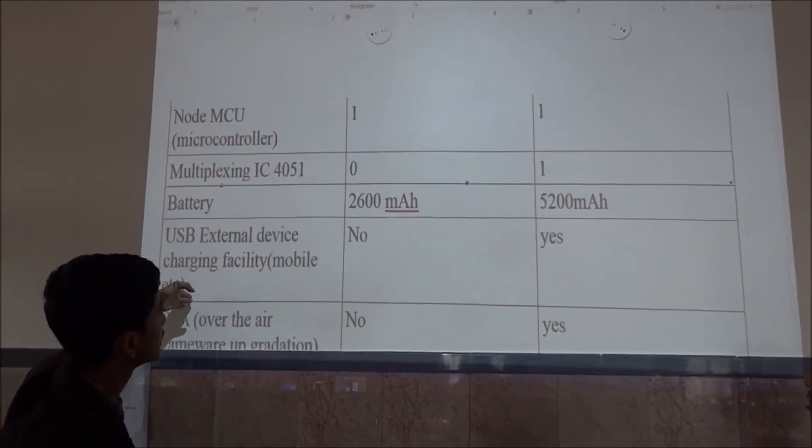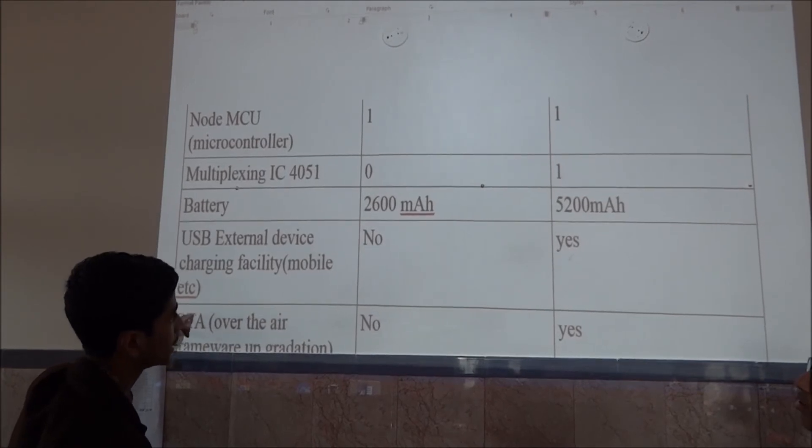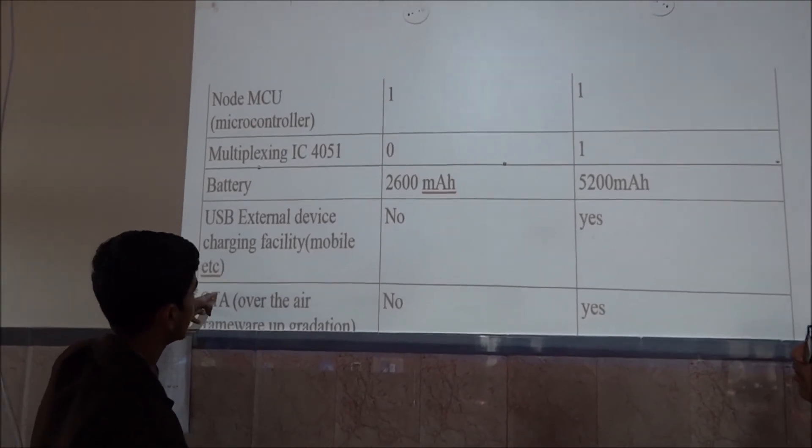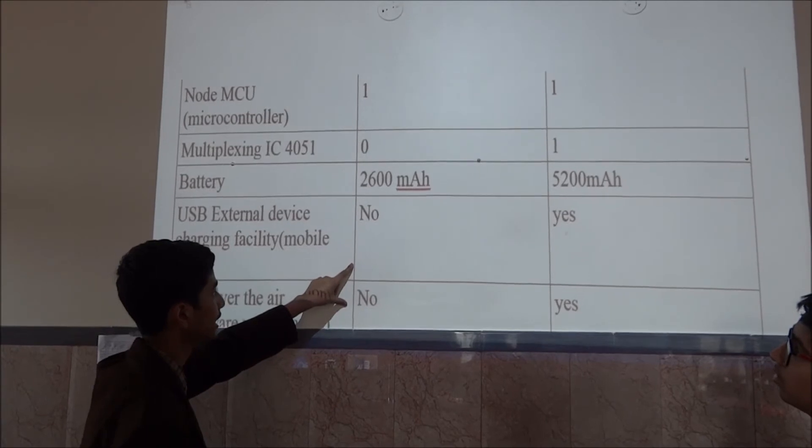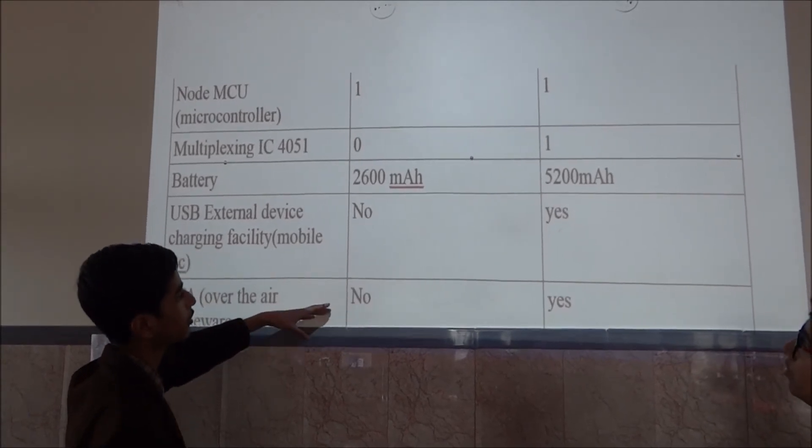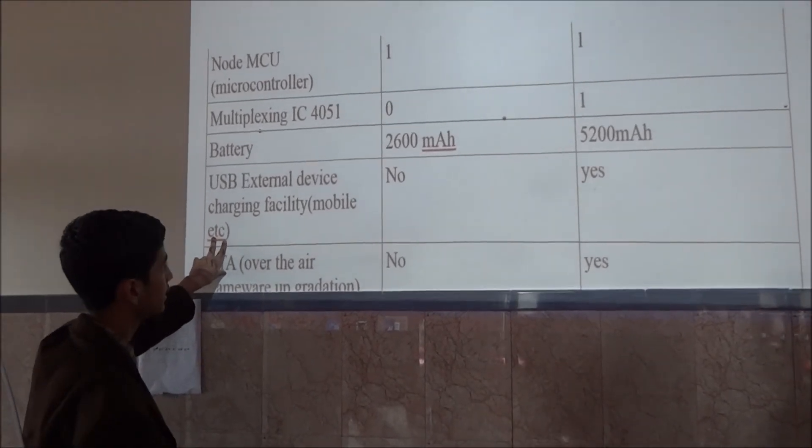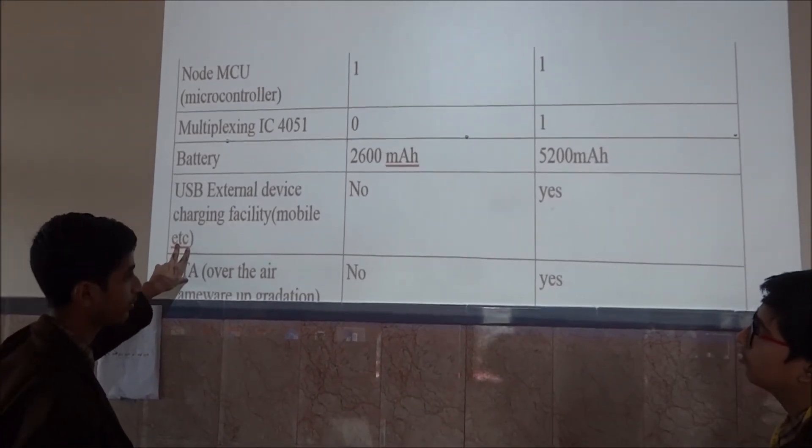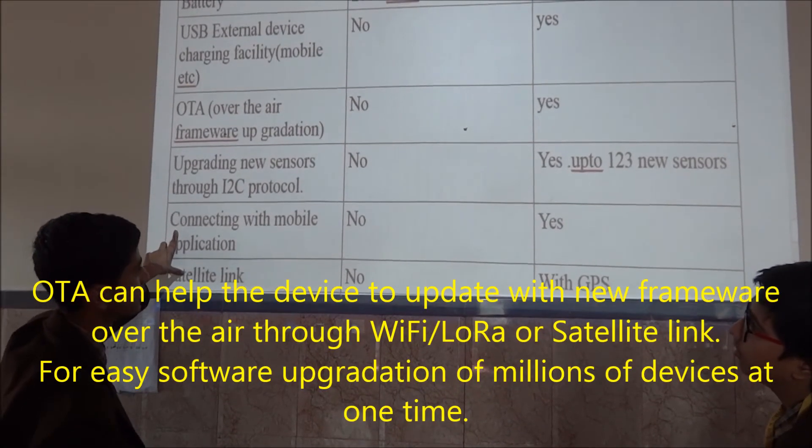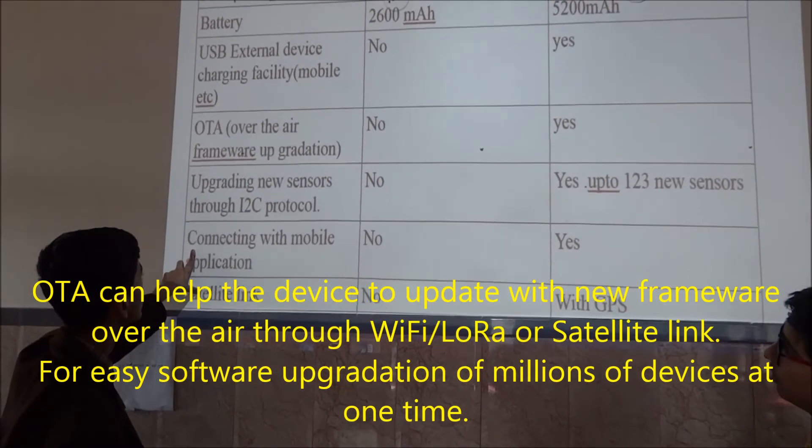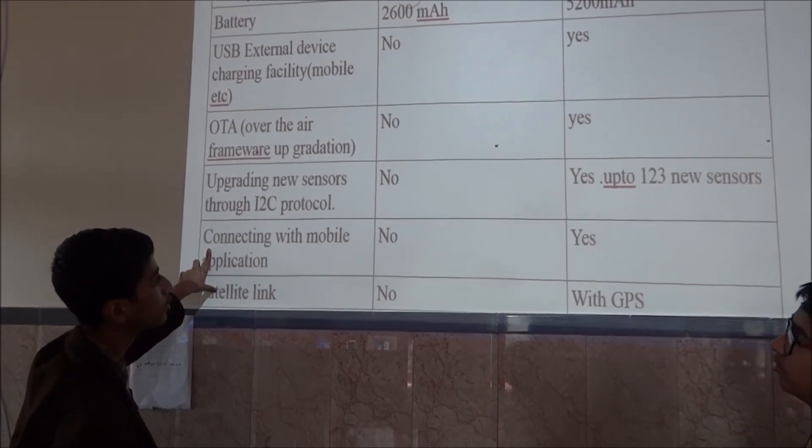Now, the microcontroller is the same in both the prototype that is NodeMCU. We have also used multiplexing ICs 4051 due to the inability of NodeMCU when getting the analog readings. The major difference is the battery that we are getting. Earlier, we had just a 2600 mAh battery. But now, we are using just a double amount that is 5200 mAh battery. Now, we are also giving them the facility to charge the mobile. And it can also act as an external source of power. Then, we also have over-the-air firmware upgradation. This is a very important part of our project. We can upgrade any of our work. We can upgrade millions of our devices with just one click. It means there will be no need of any hardware.